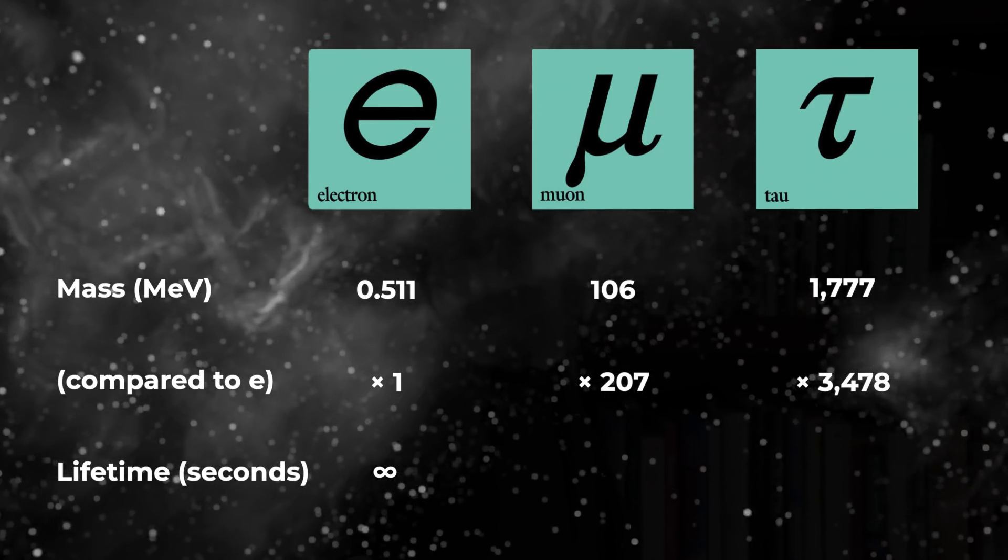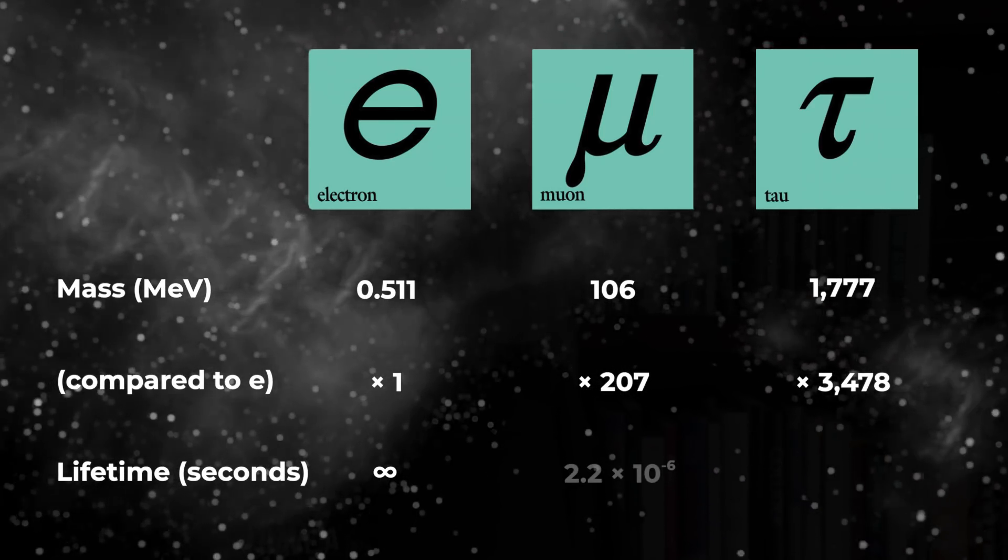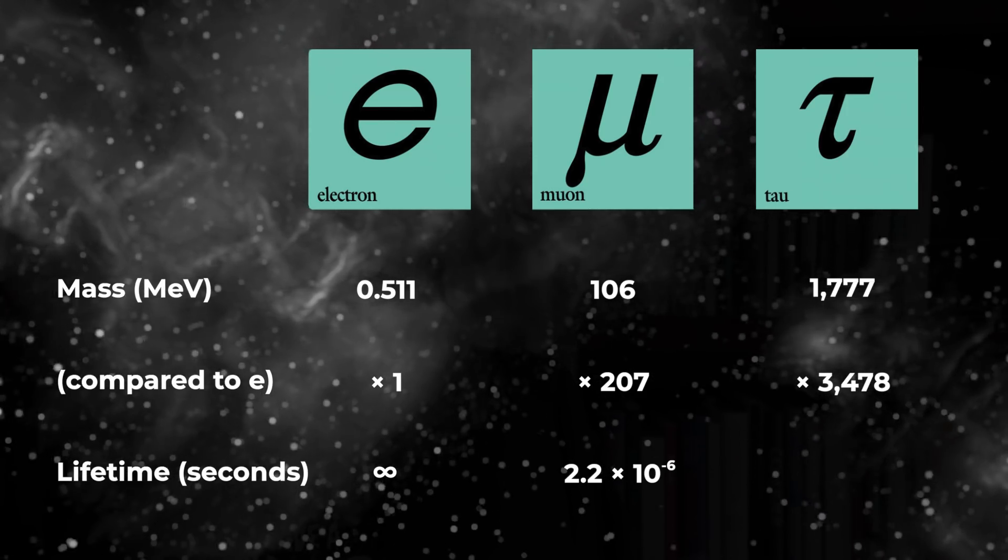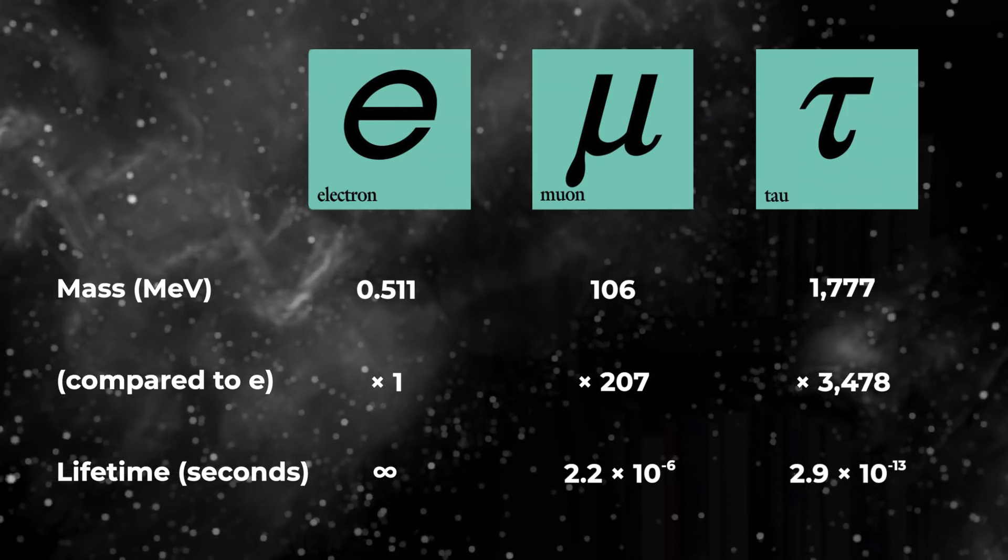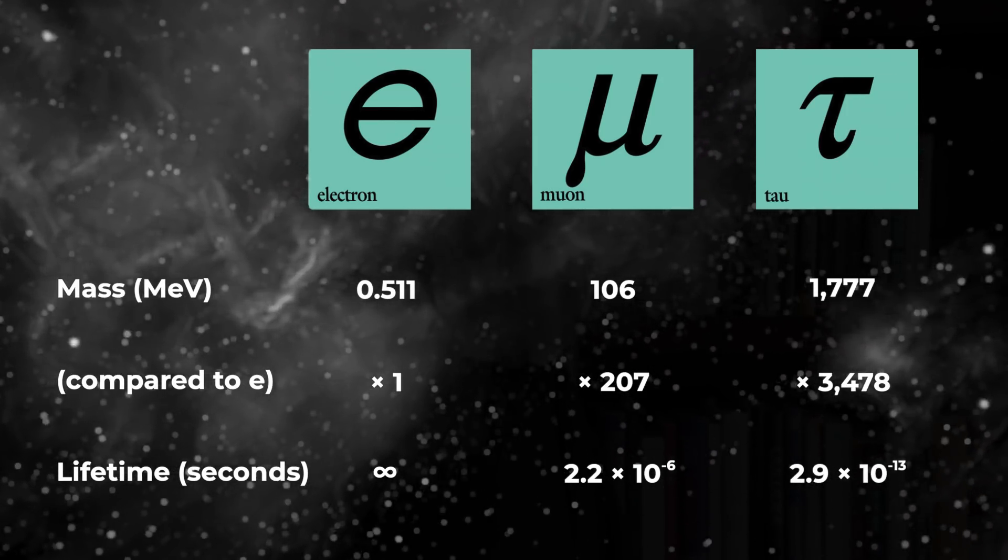The muon and tau lepton are unstable. The muon decays in about 2 microseconds, and the tau lepton decays in 0.3 trillionths of a second. So you need good equipment to measure them.